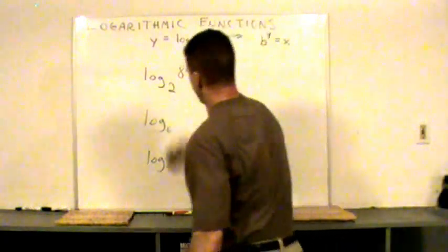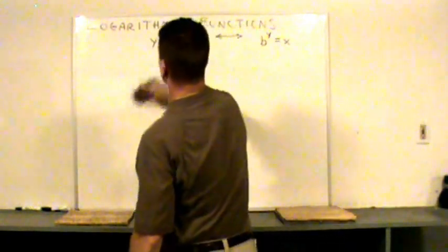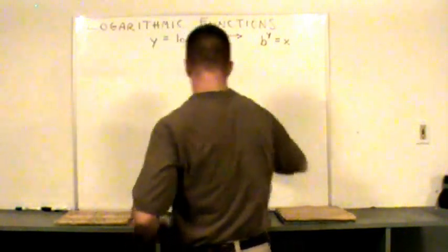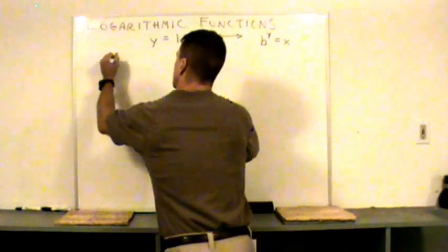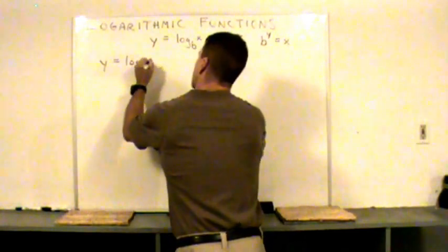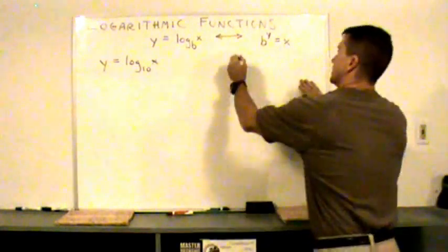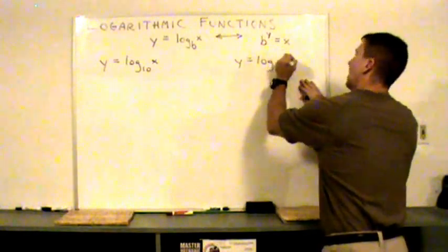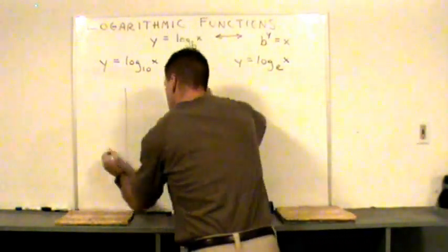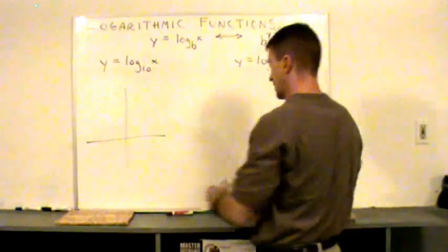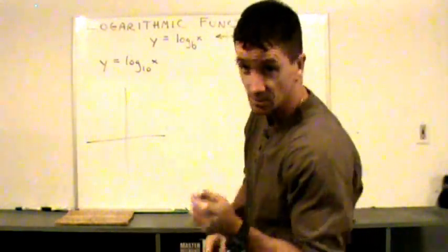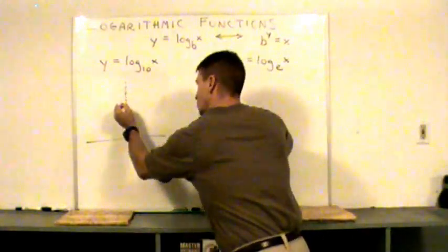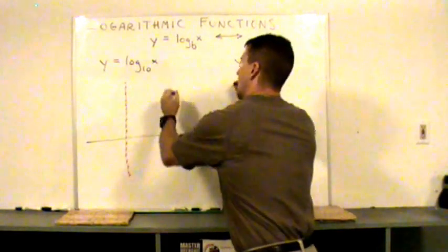I'll erase all this. Let's talk about the sketches of these logarithmic functions. So how about we start with y equal to log base 10 of x. These graphs, remember they're the inverse of exponential functions. Exponential functions had horizontal asymptotes. These have vertical asymptotes.